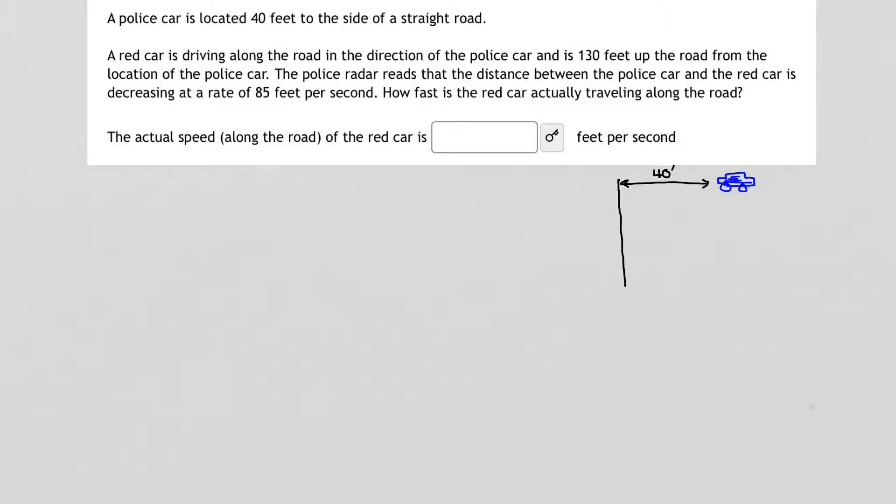Now what's going on is I have a red car that's driving along the road towards the police car. So let me put my little red car here. And he's driving towards the police car but along the road. At a certain point, it is 130 feet up the road from the police car. Now that 130 feet is actually going to be changing as the red car moves along the road. So I'm not going to label that quite yet in my problem.